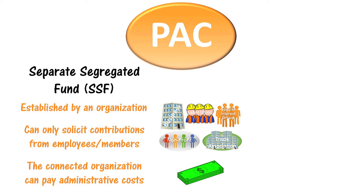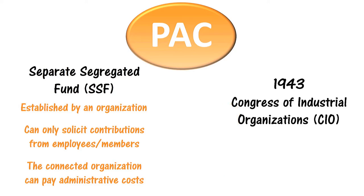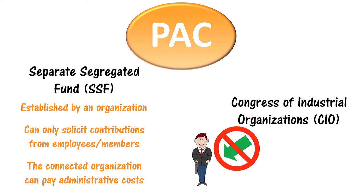This was the first type of PAC, and it was created in 1943 by a labor union called the Congress of Industrial Organizations. Because federal law prevented the CIO from contributing to candidates, it created a PAC so it could still have influence in elections.